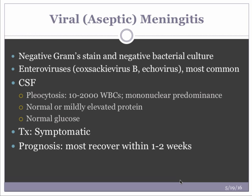In viral or aseptic meningitis, CSF will show a negative gram stain and negative bacterial culture. Common viruses isolated include enteroviruses such as Coxsackievirus B and echovirus. On CSF inspection you will see pleocytosis with a mononuclear predominance — very important to know. Additionally, protein is normal or mildly elevated and glucose is normal.